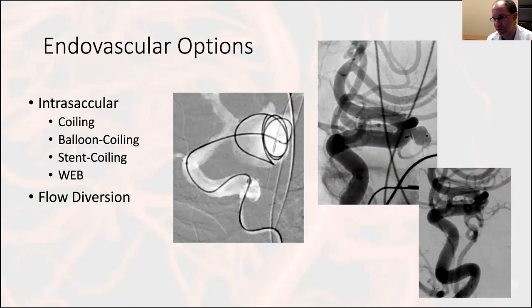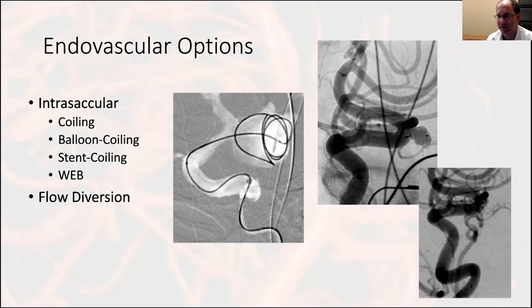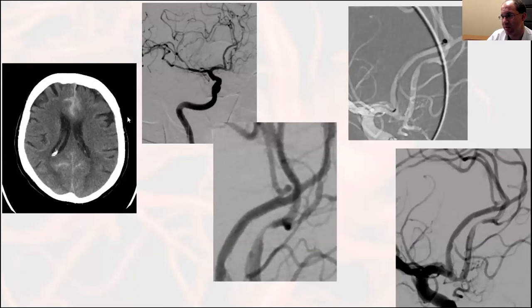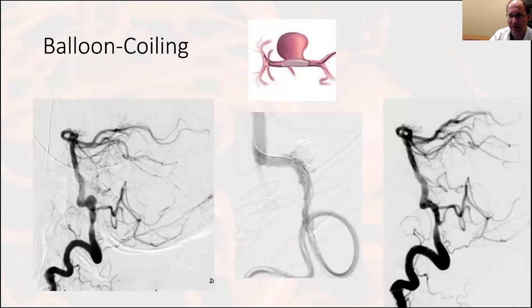Endovascular options are much broader than just coiling. Intrasacular options include simple coiling, balloon-assisted coiling, stent-assisted coiling, and the WEB device. Simple coiling examples: a ruptured basilar apex aneurysm coiled primarily; a ruptured superior cerebellar artery aneurysm where a coil was placed in the daughter lobe first; and a small ruptured pericallosal aneurysm in an elderly patient secured with a single coil — illustrating how malignant these can be. Small aneurysms tend to have smaller necks, making simple coiling more feasible.